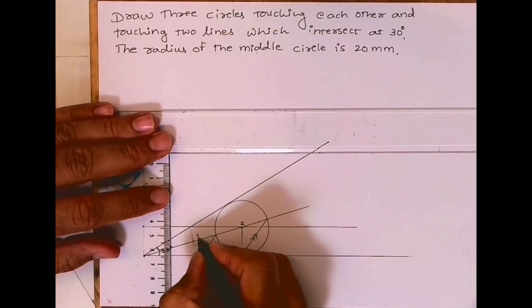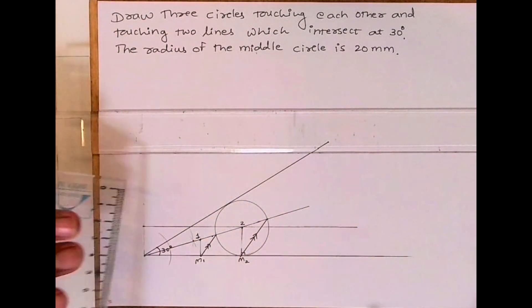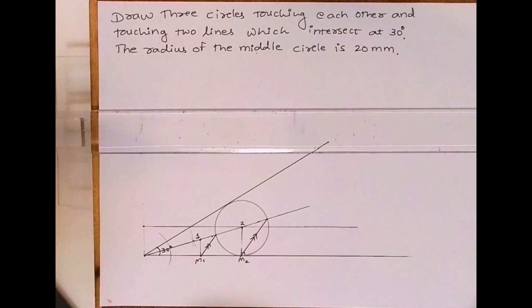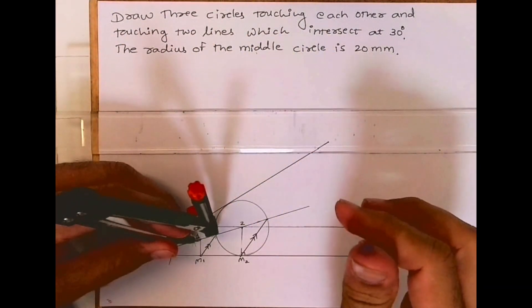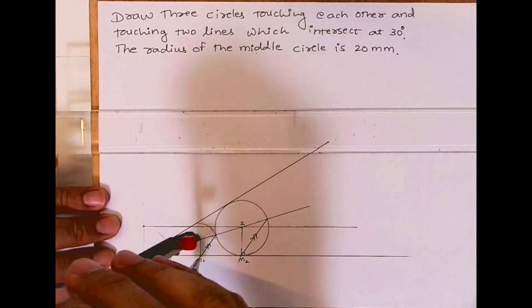Draw a vertical line. Wherever it will cut, that is O1. Take O1 to M1 as radius for the smaller circle, the first circle, and you can draw the required circle.